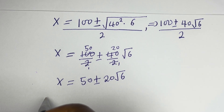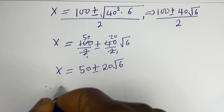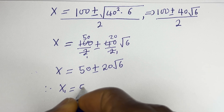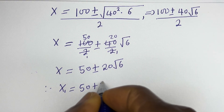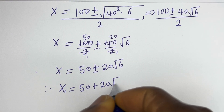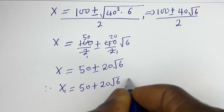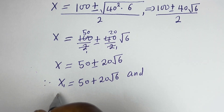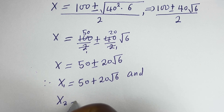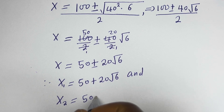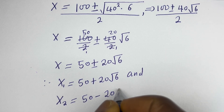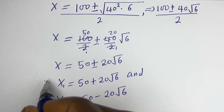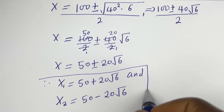Therefore, x₁ is equal to 50 plus 20 root 6, and x₂ is equal to 50 minus 20 root 6. We've gotten the values of x₁ and x₂.